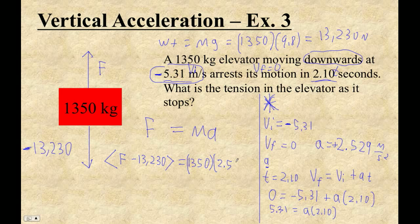This guy's positive. So if I go 1350 times 2.529, I get 3,414.15. Okay, so now to get that force that we don't know, I have to add 13,230. So I get 16,644. All right, so 16,644 newtons.